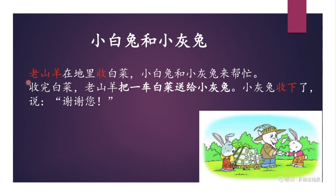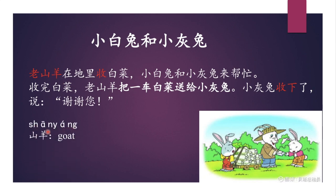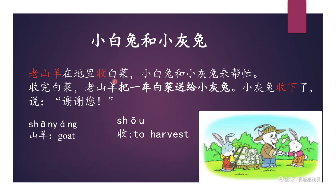老山羊在地裡收白菜。 山羊 means goat, 老山羊 is old goat. 在地裡 means in the field. 收 means to harvest. 白菜 means cabbage. 老山羊在地裡收白菜 — The old goat was harvesting cabbage in the field.